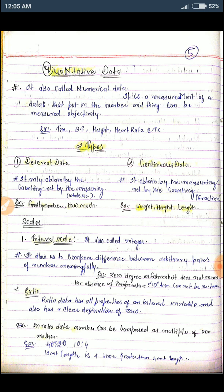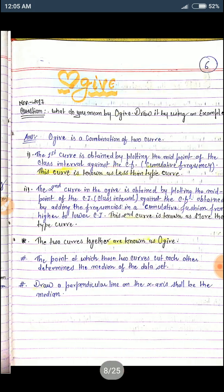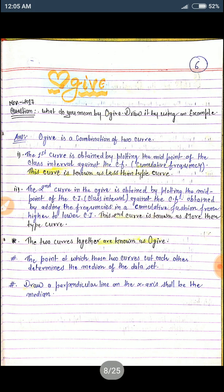Interval scale and ratio scale. Next is ogive. Ogive is a curve. The curve is known as the less than type and more than type. Where they meet together, it's called the ogive.